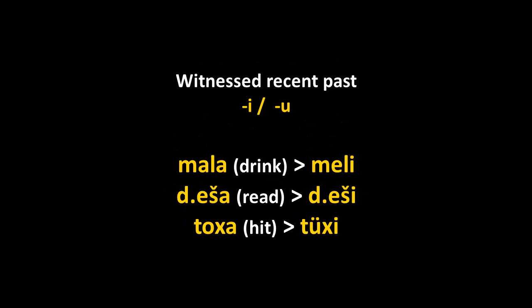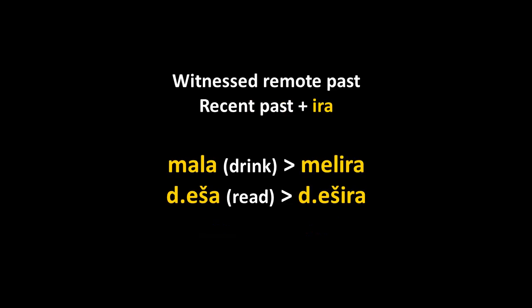There is a witnessed recent past in Chechen — related to evidentiality, a feature also very commonly found in Native American languages. Evidentiality shows whether you've witnessed the fact or are speaking from hearsay because somebody told you. The witnessed past is formed by -i or -u at the end: mala → meli, desha → deshi, toha → tushi. The witnessed remote past uses the same vowel change but adds -era at the end.